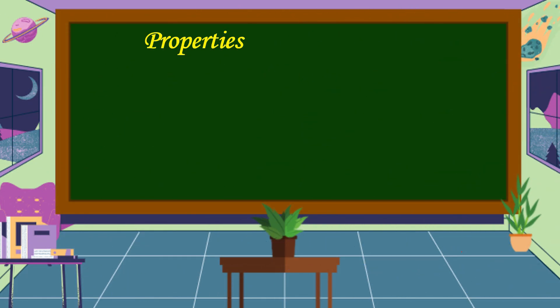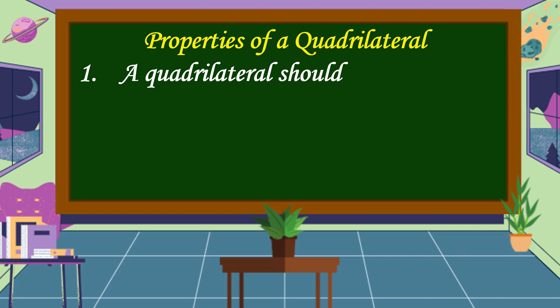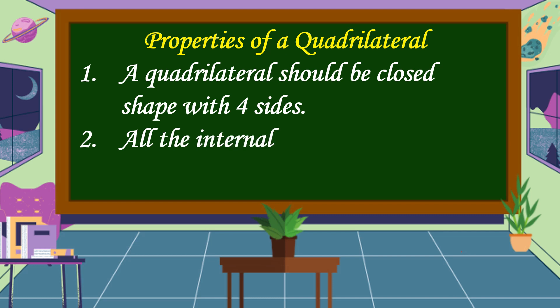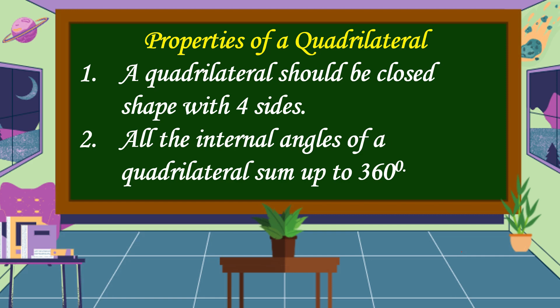Now let's study the properties of a quadrilateral. The first property: a quadrilateral should be a closed shape with four sides. Second property: all the internal angles of a quadrilateral sum up to 360 degrees.